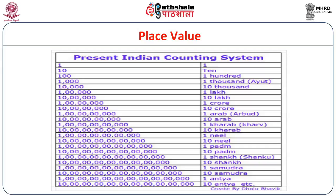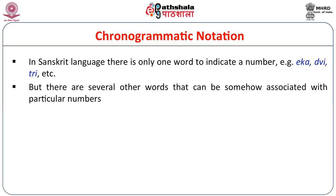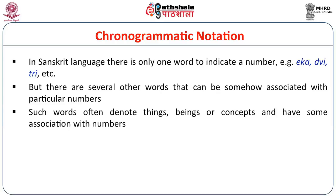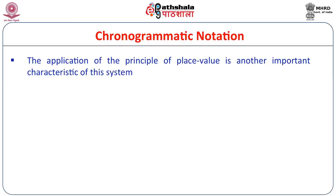Besides these two systems of notation — the numerical system and the decimal place value notation — there is another system known as the chronogrammatic notation. In Sanskrit, there is only one word to indicate a number, but several other words can be associated with particular numbers, denoting things, beings or concepts having some association with numbers. These were used by early astronomers and mathematicians in their metrical compositions. The application of the principle of place value is another important characteristic of this system — like decimal place value notation, the chronogrammatic notation also uses positional value.